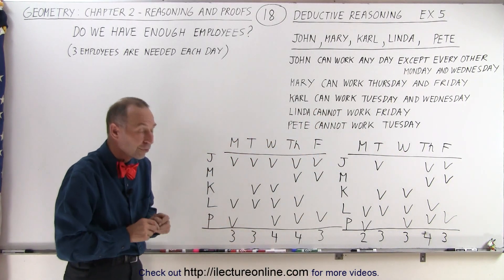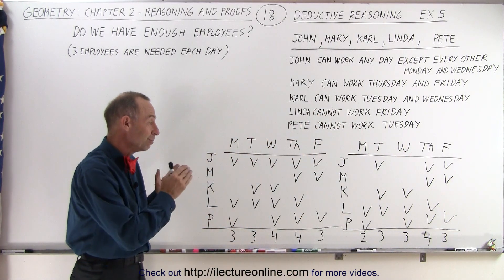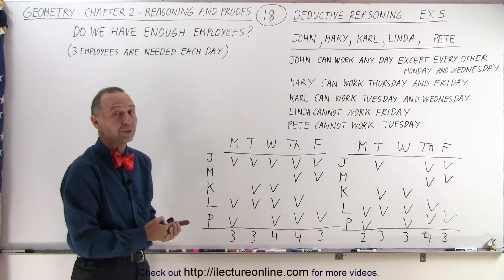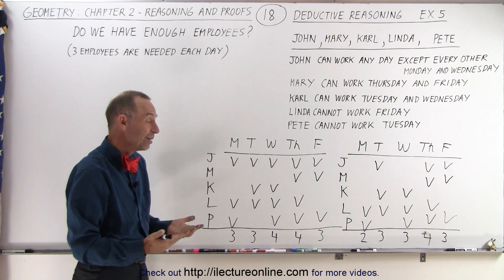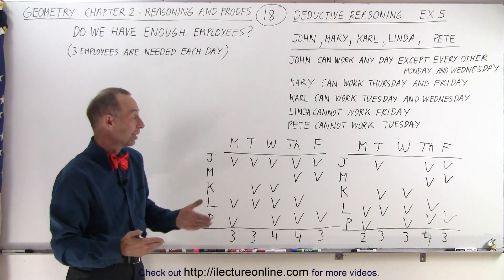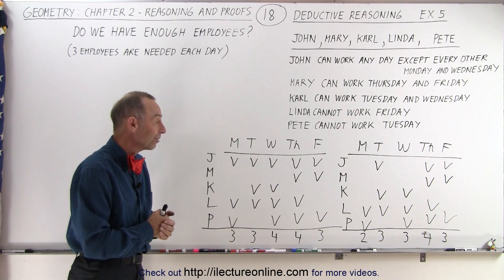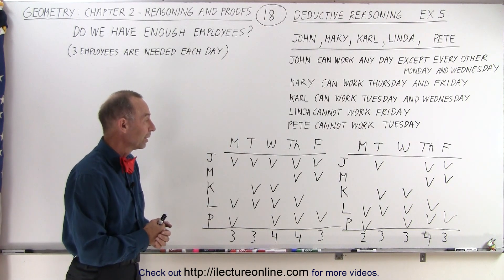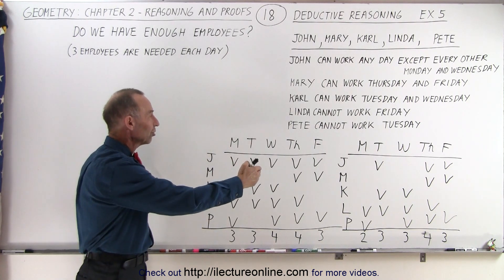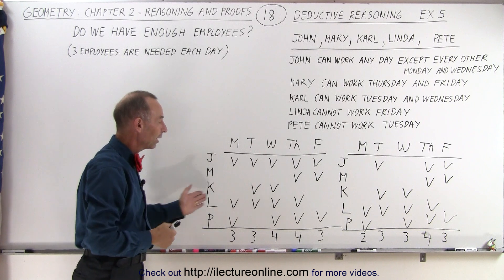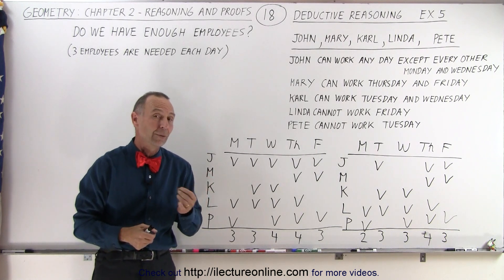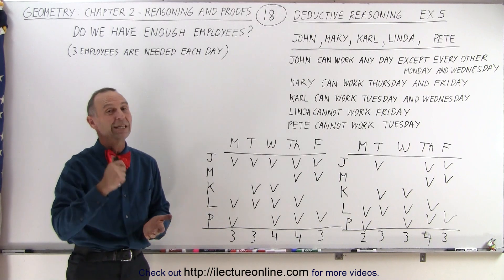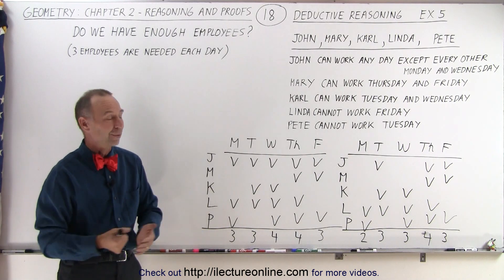Notice we have enough employees for four to five days. But Monday every other week we only have two people available to work in the store, which means we probably need to get one more employee that is available to work at least Monday every other week to fill in the schedule. With a nice visualization following the rules, we can quite easily determine whether we have enough employees. In this case, there are not enough — we need at least one more.